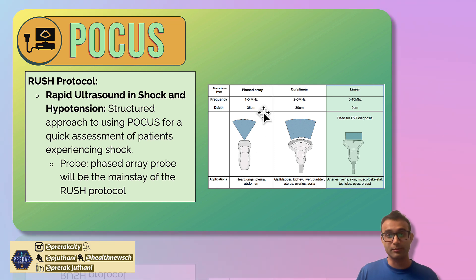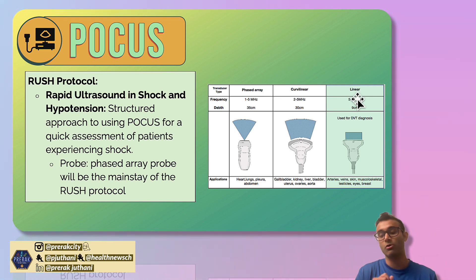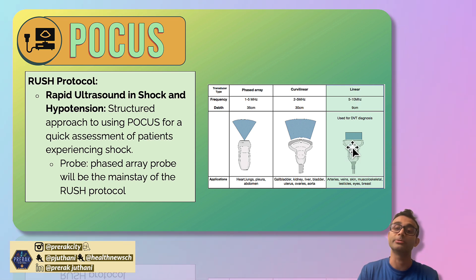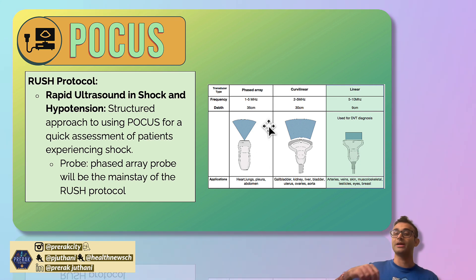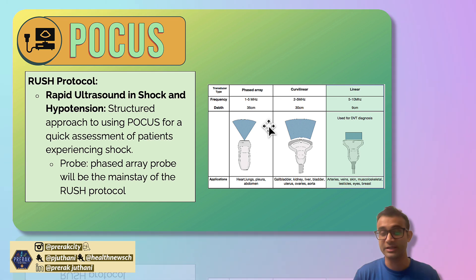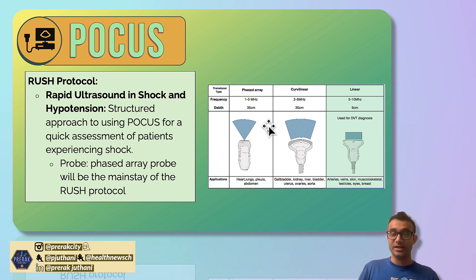The key takeaway is that when looking at the heart, you want to use the phased array probe. The differences between probes come down to frequency. The linear probe is very high frequency, and the higher the frequency, the shallower the depth — so a high frequency probe only lets you look at superficial structures, making the linear probe best for superficial vessels. The phased array probe is lower frequency, allowing you to look deeper, which is much better when trying to visualize the heart, which lies below the ribs and sometimes below the lungs in certain views.